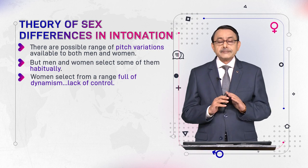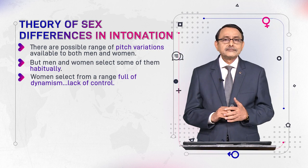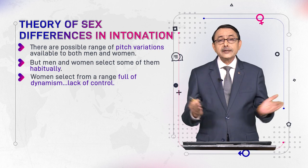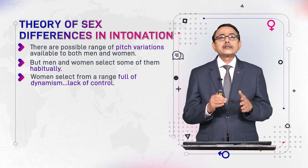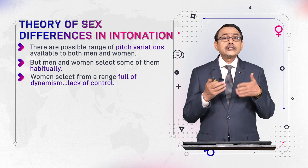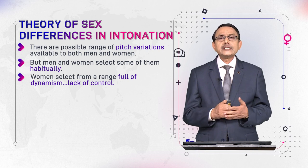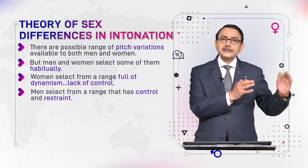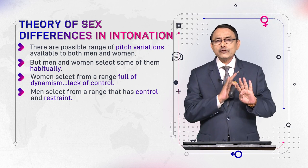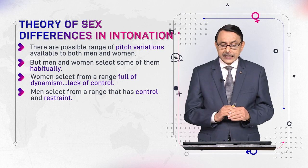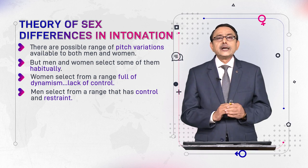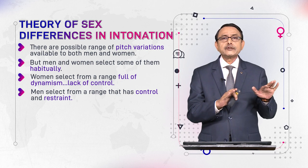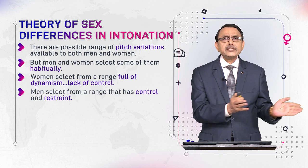Women select from a range full of dynamism — that is, a lack of control. They select from a pitch range where loudness is available to them, to express their emotions openly and uncontrollably. Men, on the other hand, select from a different range where there is lack of loudness, there is control and restraint, and there is emotional stability. So they don't need loudness in their pitch range.